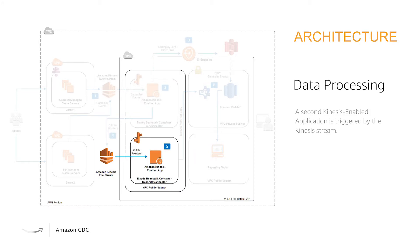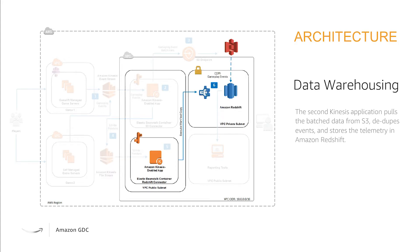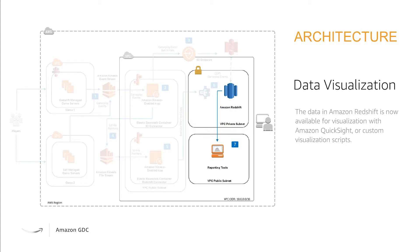Once that's done, we have another application trigger that occurs and allows it to begin going into the data warehousing, where it removes the duplicate entries and stores some of the telemetry data in another database. From there, you get the data visualization that allows you to get the insight that you're actually looking for, and this is where you'll be able to make your decisions.